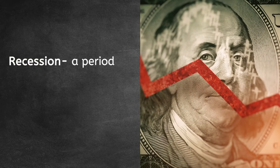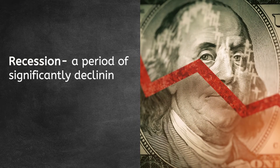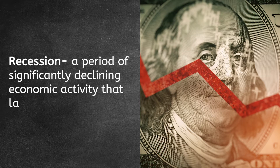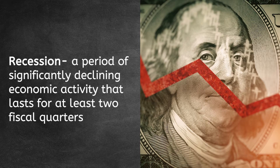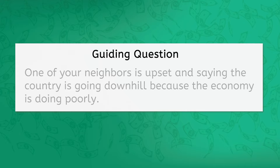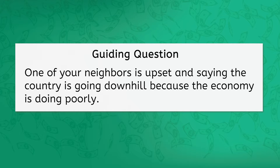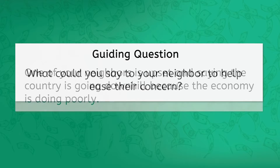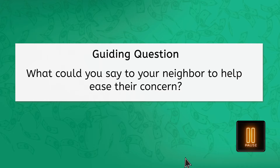Now, normally the highs and lows aren't as extreme as the ones experienced in the 1920s and 1930s, but there can be extended periods of contraction. A recession is a period of significantly declining economic activity that lasts for at least two fiscal quarters, which is the equivalent of six months. Now, let's take a moment to check in. Say one of your neighbors is upset and saying the country is going downhill because the economy is doing poorly. What could you say to your neighbor to help ease their concern?